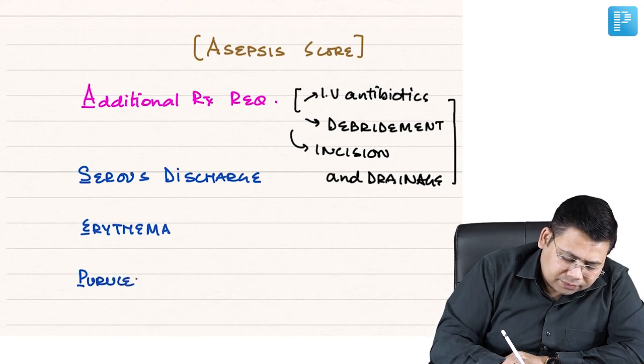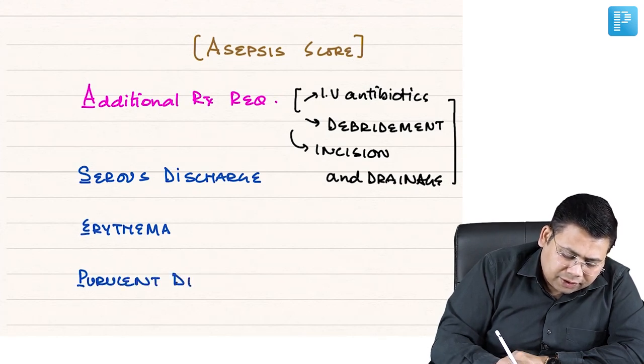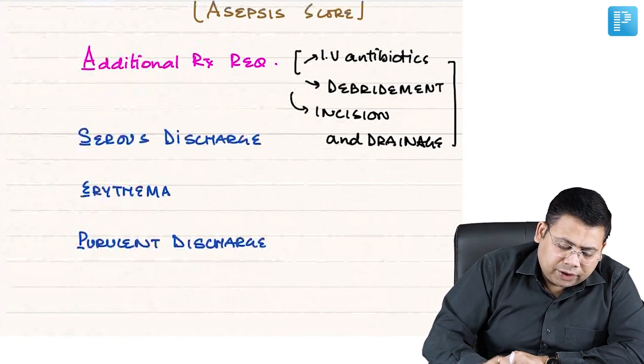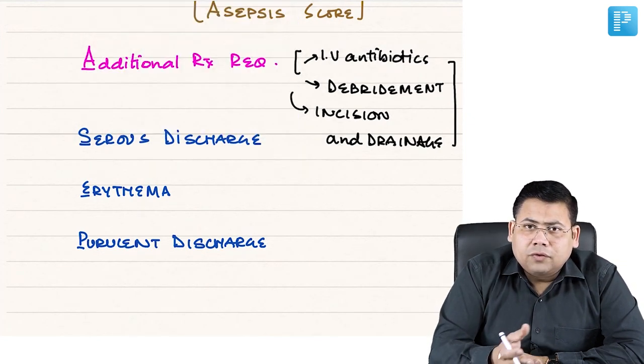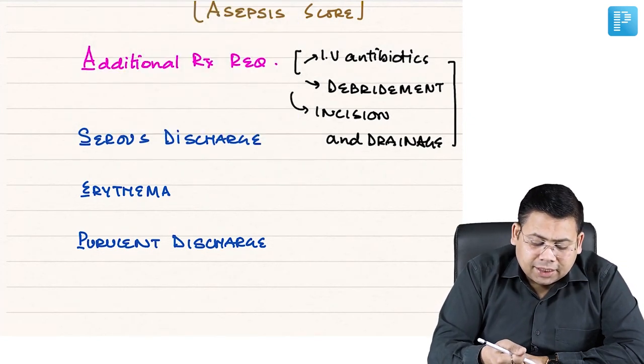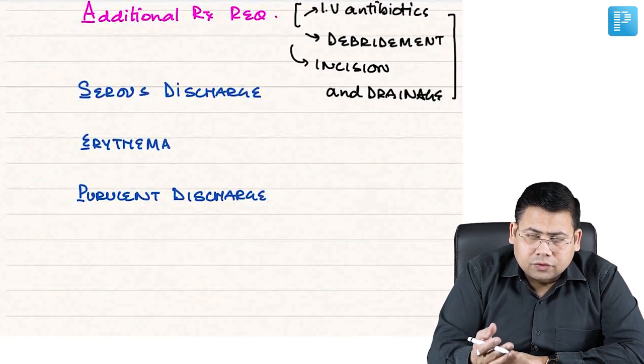P stands for purulent discharge. So if there is a purulent discharge, the first point - that is additional treatment required - you grade from one to ten. Remaining, you grade from zero to five or one to five.